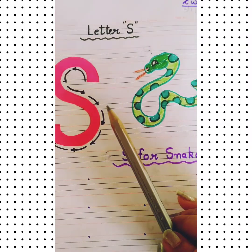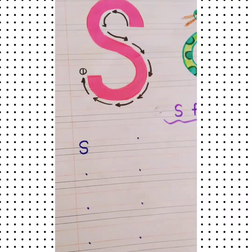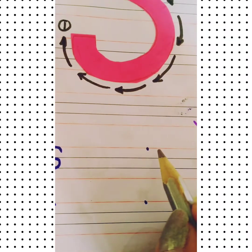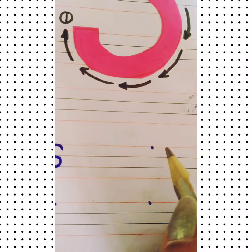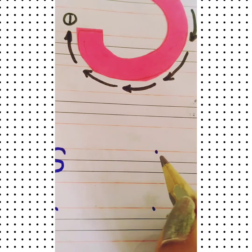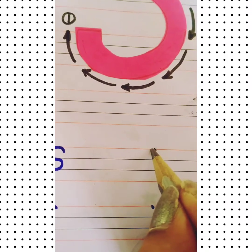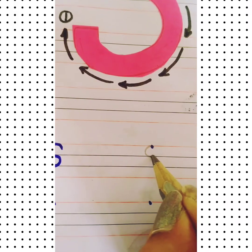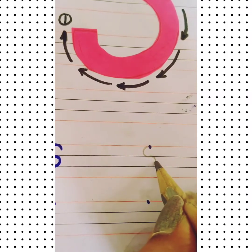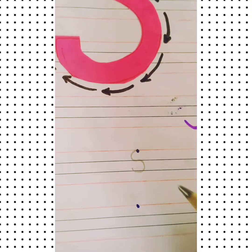S for snake, S for snake. So now we are going to make letter S. Kids, look here properly how to make letter S. We have one dot here, so from this dot to this first line, first you have to make a left curve.